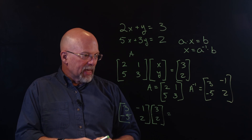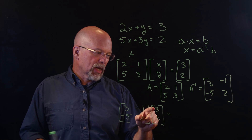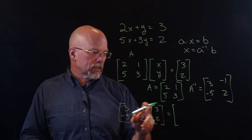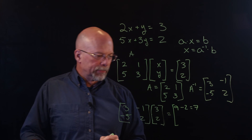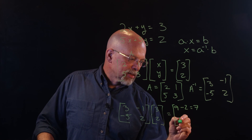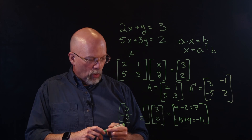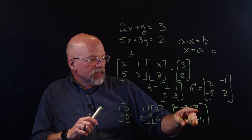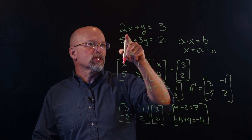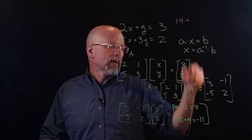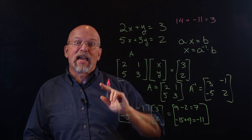All I did was move A to the other side of the equal sign by taking its inverse. Computing [3, -1; -5, 2] times [3, 2]: the top element is 3×3 plus (−1×2) = 9 − 2 = 7. The bottom element is (−5×3) plus (2×2) = −15 + 4 = −11. So x equals 7 and y equals −11. Checking the first equation: 2×7 + (−11) = 14 − 11 = 3. Correct.